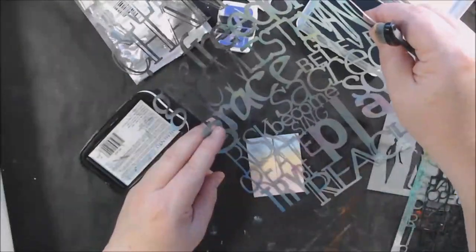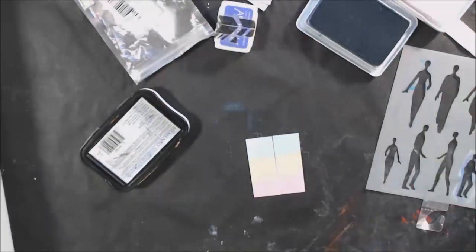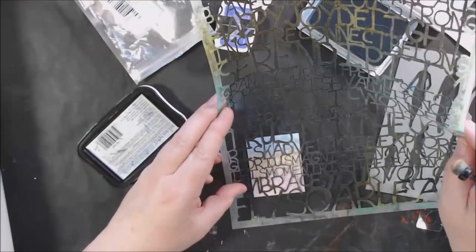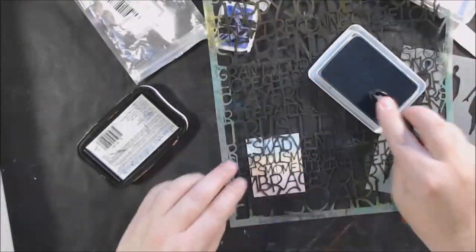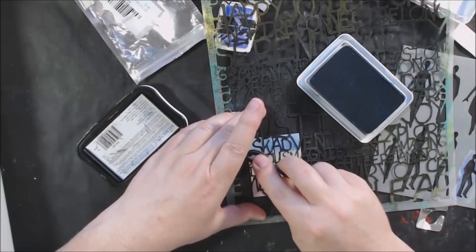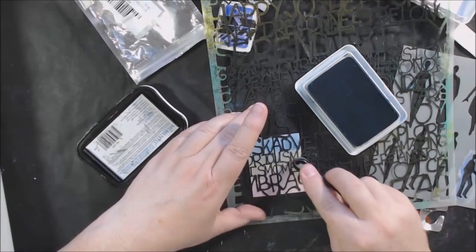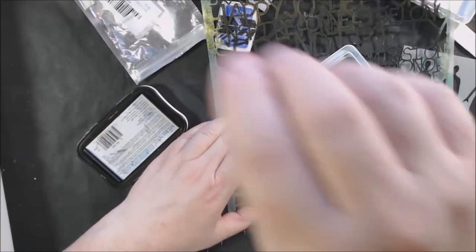So I first used some pigment type ink and I used very light colors, very light pastel colors. That particular ink was from Brutus Monroe I think, and I just put it right onto the plastic by just tipping the little tiny ink pads over and pressing it down to the plastic.